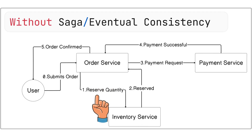If the inventory service confirms that the stock is available and reserves it, then the order service proceeds. If the inventory service responds with a failure — for example, insufficient stock — then the order service immediately aborts the process and responds to the user with an error.